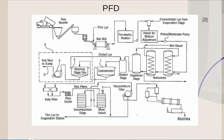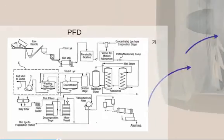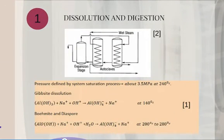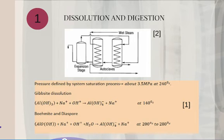Process Flow Diagram. Step 1: Dissolution and Digestion. Bauxite is heated with hot sodium hydroxide solution at 150 to 200 degrees Celsius, and the hydrated aluminium oxide are selectively dissolved from bauxite. The desired aluminium oxides are dibsite, bromide, and diaspor.